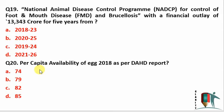Next question: per capita availability of eggs as per the DASD (Department of Animal Husbandry and Dairying) report. The per capita availability of eggs is around 79 for 2018.